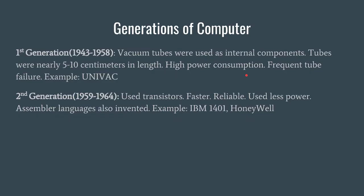That led to the invention of the second generation computers, which started in 1959 and resumed till 1964. These computers used transistors, which were very fast compared to the vacuum tube computers. These were highly reliable as well because the degree of failure was very less compared to first generation computers. Moreover, transistors, being semiconductor devices, used very less power. In this period, the concept of assembler languages or assembly languages was also invented. Examples of second generation computers include the IBM 1401 and Honeywell.